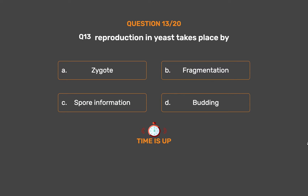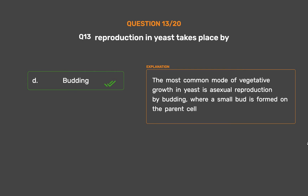The correct answer is Option D – Budding. The most common mode of vegetative growth in yeast is asexual reproduction by budding, where a small bud is formed on the parent cell.